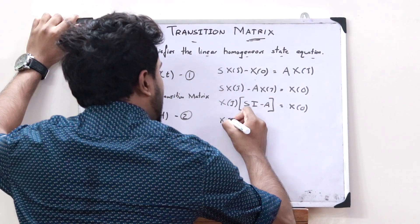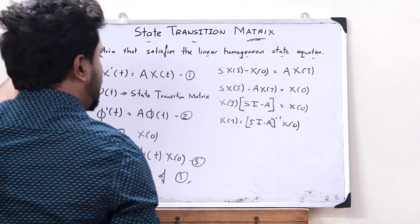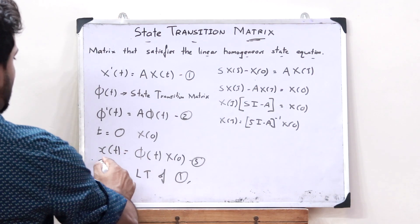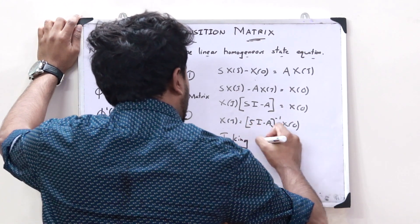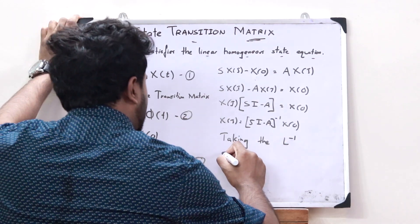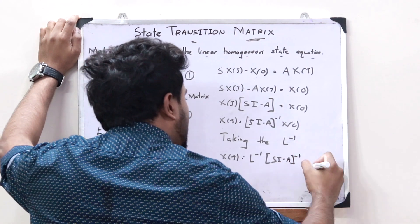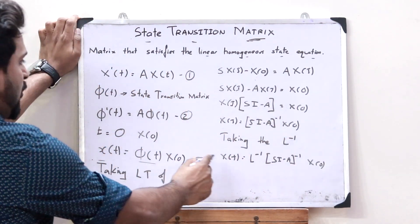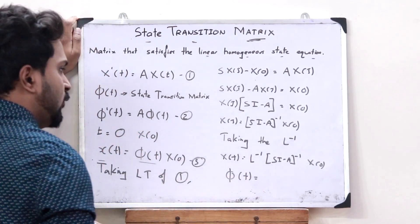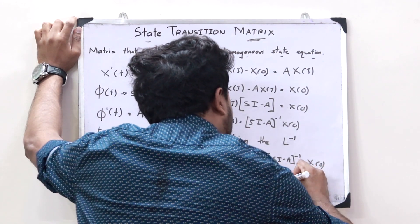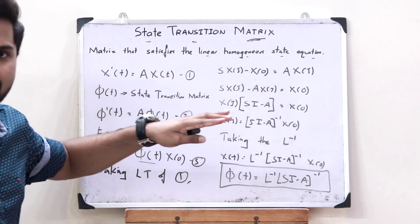From this, X(s) is equal to (sI − A)⁻¹·x(0). Now, in order to get it in the required form, we take the inverse Laplace transform. The inverse Laplace transform of X(s) is x(t), so x(t) = ℒ⁻¹{(sI − A)⁻¹}·x(0). Upon comparing this with equation number 3, we get that the state transition matrix phi(t) = ℒ⁻¹{(sI − A)⁻¹}. This is simply the expression for the state transition matrix.